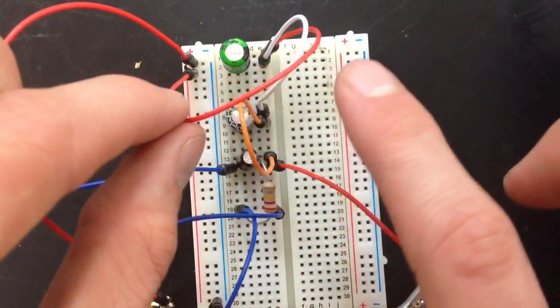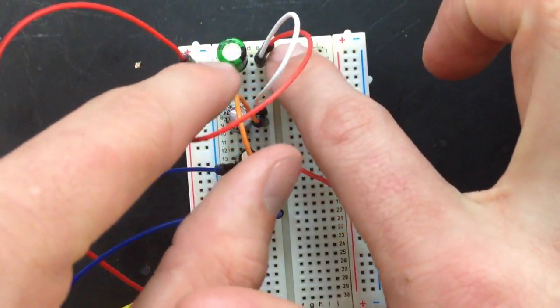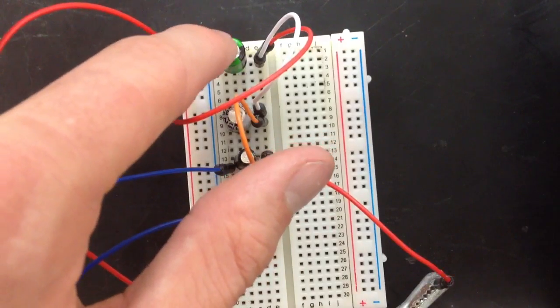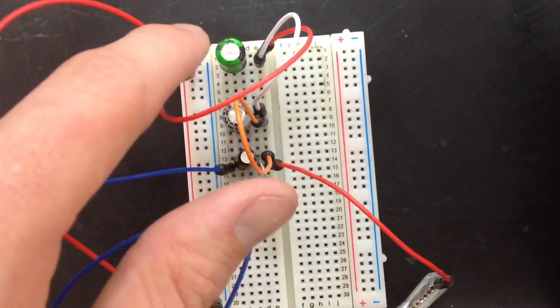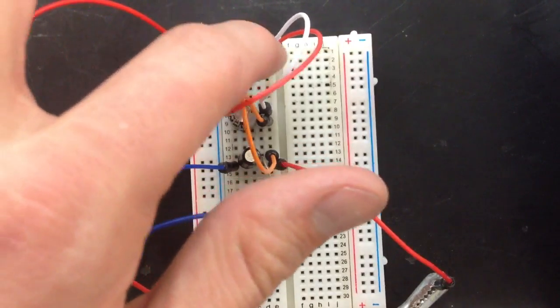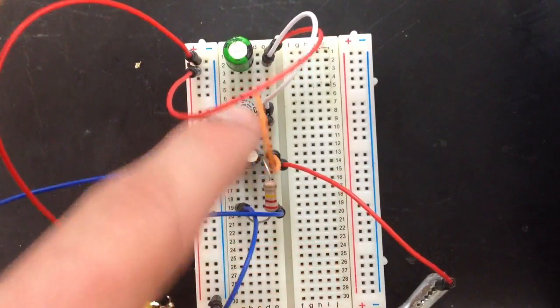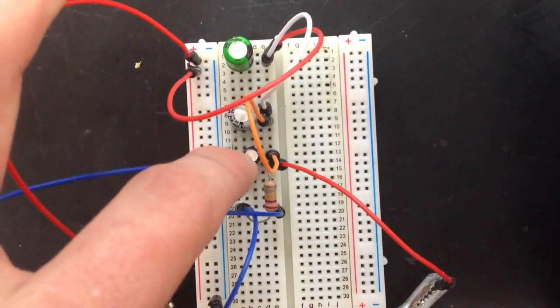So this red wire runs along here, and it jumps into my first row, which that current flows into this capacitor. Now, that capacitor has the current flowing through to this wire, which flows to that capacitor, and then along this wire to that capacitor.